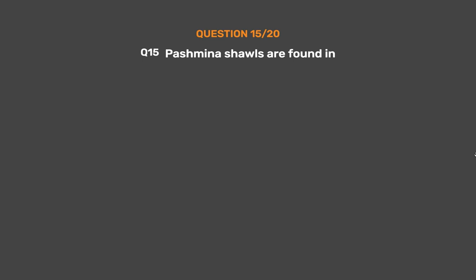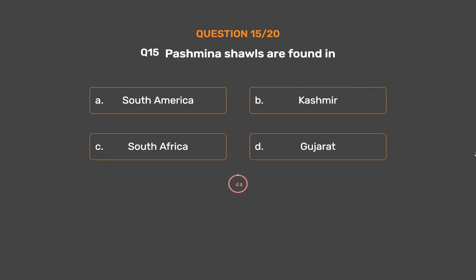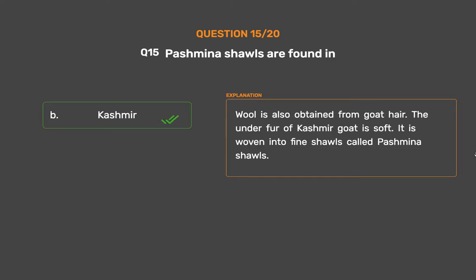Question No. 15. Pashmina shawls are found in — Option A: South America, Option B: Kashmir, Option C: South Africa, Option D: Gujarat. The correct answer is Option B: Kashmir. Wool is also obtained from goat hair. The under fur of the Kashmir goat is soft, and it is woven into fine shawls called Pashmina shawls.